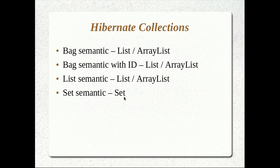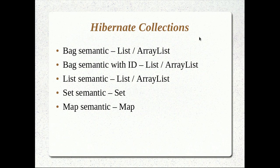The next one is the set semantic — this is similar to a Set data type in Java. And then finally, a map — again similar to a Map data type in Java. You don't have to worry too much about the semantics; you'll be working on one of these data types — a list, a set, or a map of objects — and Hibernate uses one of these semantics behind the scenes in order to maintain the collection.